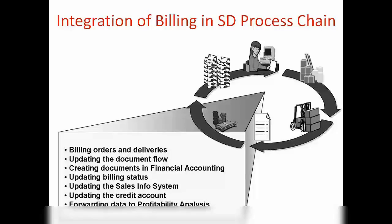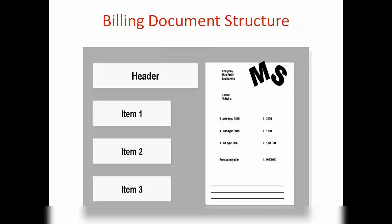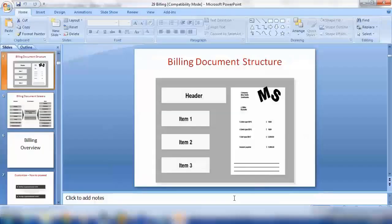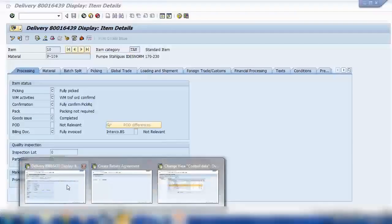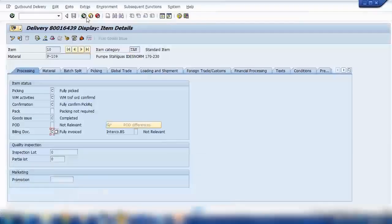These are the things that happen when we create a billing document in the SD process chain. Regarding the structure of a billing document — it has two parts: header and item, similar to the sales order, but it does not have a schedule line like the sales order does.